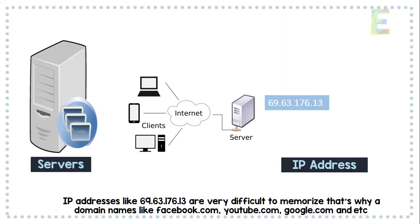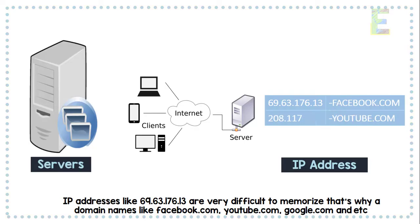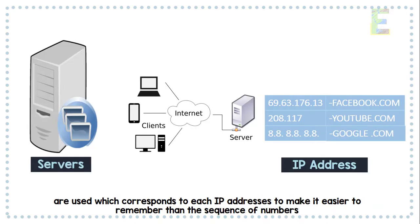That's why domain names like Facebook.com, YouTube.com, Google.com, etc. are used, which correspond to each IP address to make it easier to remember than a sequence of numbers.